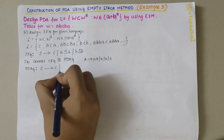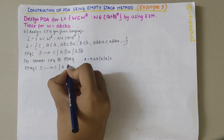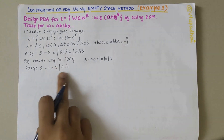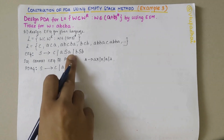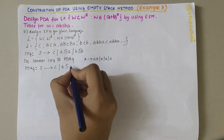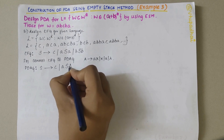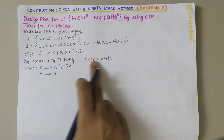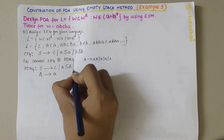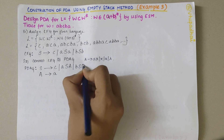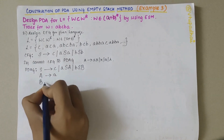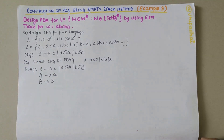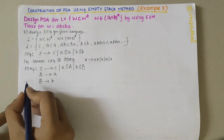S derives C. For A S A: 'A' is a terminal, S is a non-terminal, but then there's a terminal A again — so I replace the trailing 'a' with capital A, and add A → a. Similarly, for B S B, I write B S capital B, and B → b. This satisfies the PDAG condition and completes the PDAG definition.